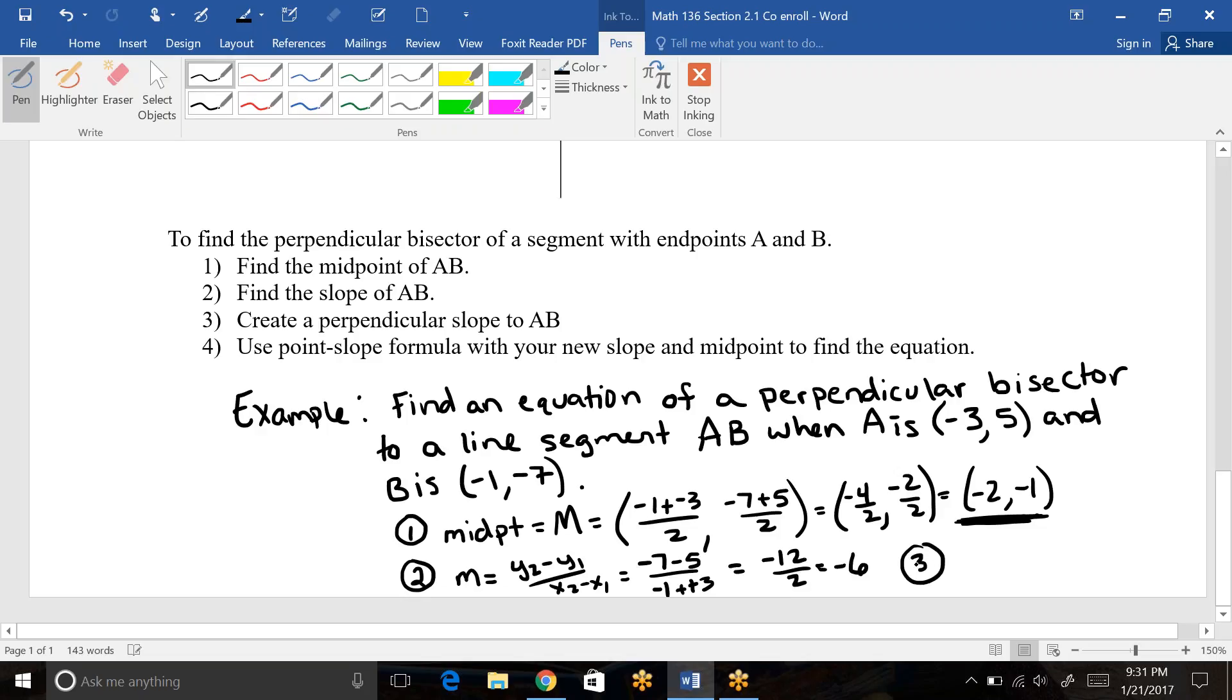Step three is we want a perpendicular slope to that. Remember that's my symbol for perpendicular. So for that we actually have to flip this fraction and change its sign so that makes it positive 1/6. This is the other piece of information that we need. So now we have our point for our midpoint, which our perpendicular bisector goes through, and we have our perpendicular slope.